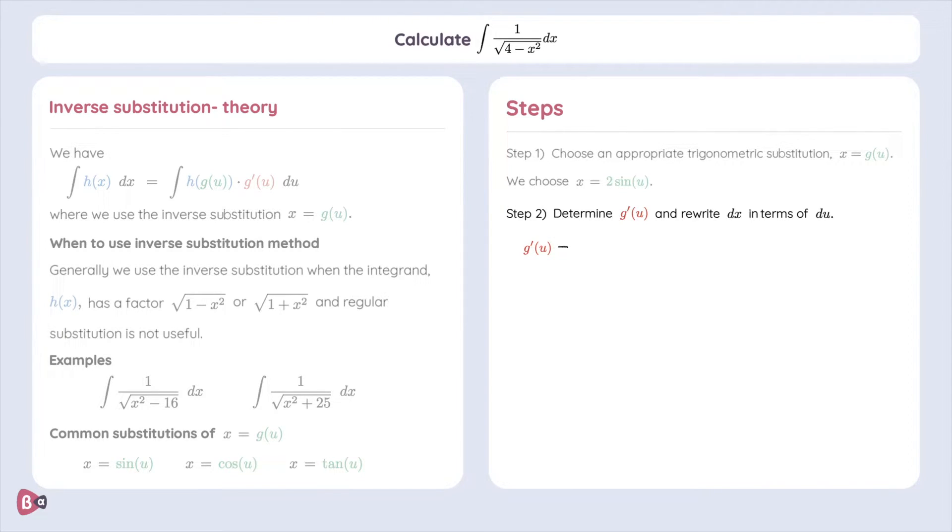g prime of u is the derivative of g of u, and that is the derivative of 2 sine of u, giving us 2 cosine of u. dx is the derivative of x with respect to u times du. This gives us g prime of u times du. We know that g prime of u is equal to 2 cosine of u, and hence we have dx is equal to 2 times cosine of u du.